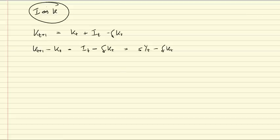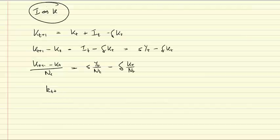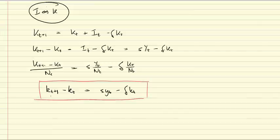Now, further, we can write this in terms of labor, so that we divide through by the number of workers. kt plus one minus kt over n is equal to s y t over n minus delta kt over n. Now, this is equal to lowercase kt plus one, kt plus one minus kt, equal to s y t minus delta kt. So we're getting close here. The change in the capital stock per worker is equal to a constant fraction of income per worker minus depreciation of capital per worker.